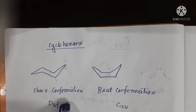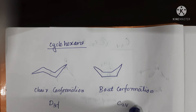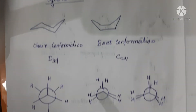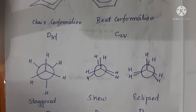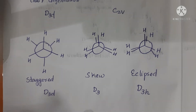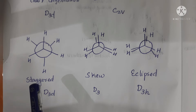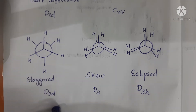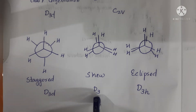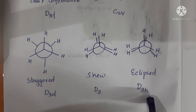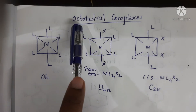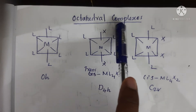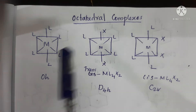Cyclohexane chair form is D3D point group and boat form is C2V. The staggered conformation is D3D. The skew conformer is D3 and the eclipsed conformer is D3H.